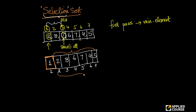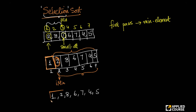Now, amongst these remaining elements I will find the smallest element. I compare 2 with 8 — 2 is smaller. 2 with 6, 2 with 7, 2 with 4, 2 with 5 — 2 is the smallest element. Since 2 is already at index 2, the smallest in the leftover array, there is nothing to do. These two elements — 1 and 2 — are actually in the place they should be: the smallest and the second smallest.